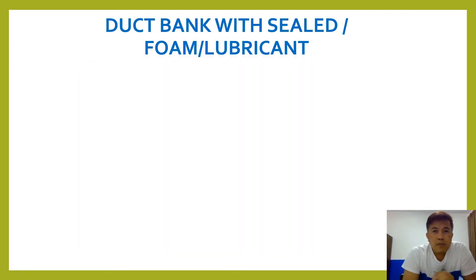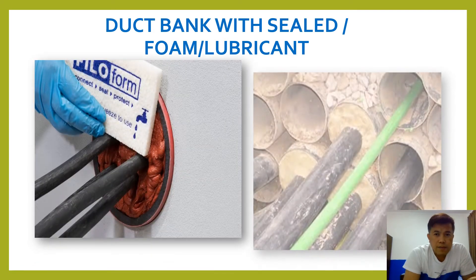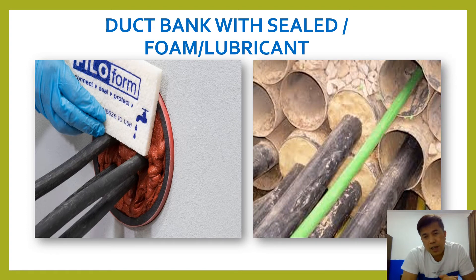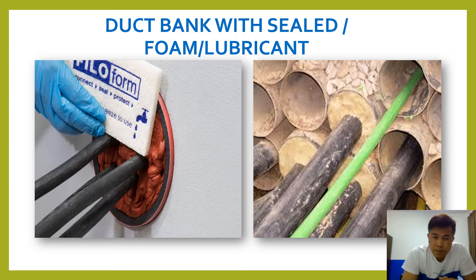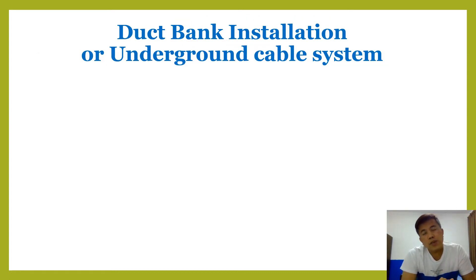Duct bank with seal foam lubricant — as you can see this is one example. On the other side, in the construction side underground, some of the PVC pipe is not covered, not sealed with lubricant or foam — it should be covered. So duct bank is the solution of the underground cable system.